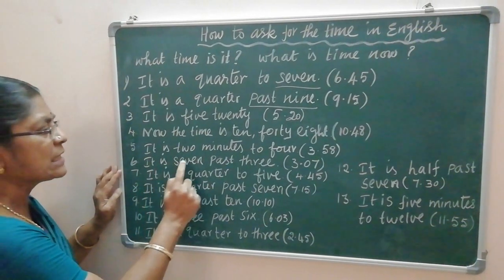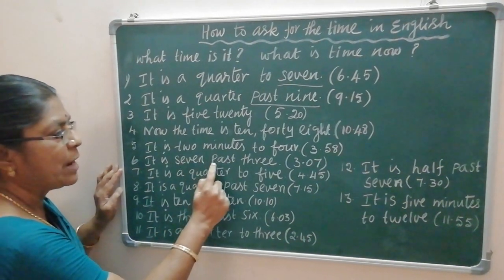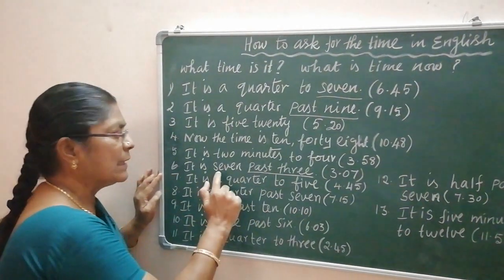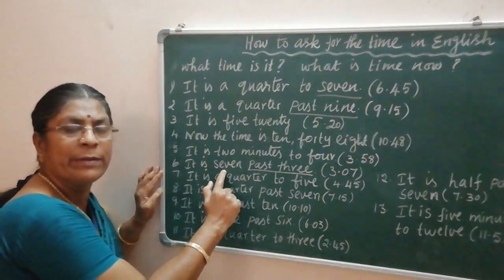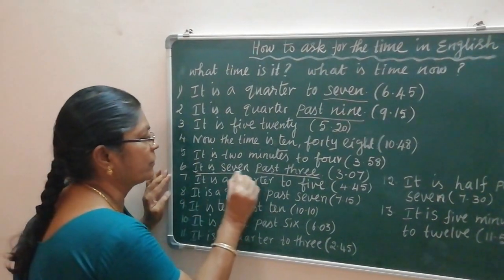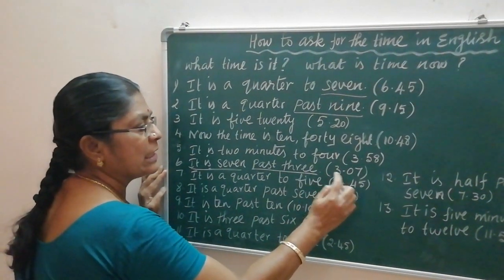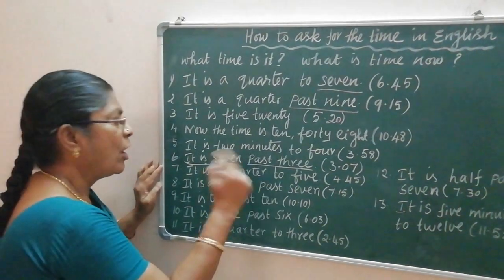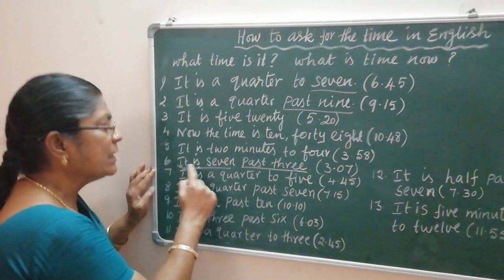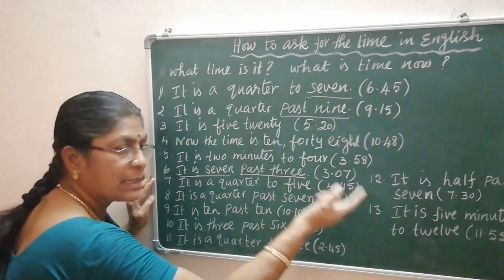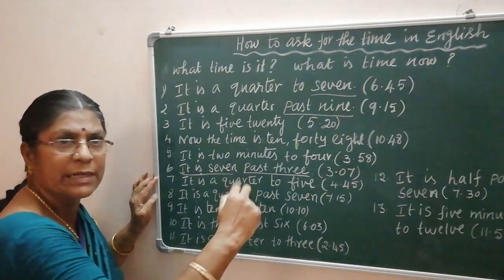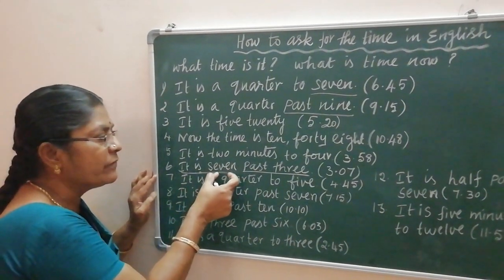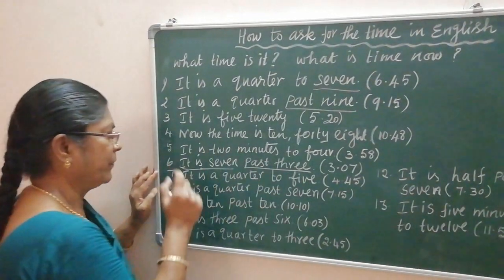Next, it is seven past three. Time — three is past. Then, after that, how many minutes did you cross? Seven. So the time is three-seven. How to say it? It is seven past three. Three is past, so you have to say: it is seven past three.